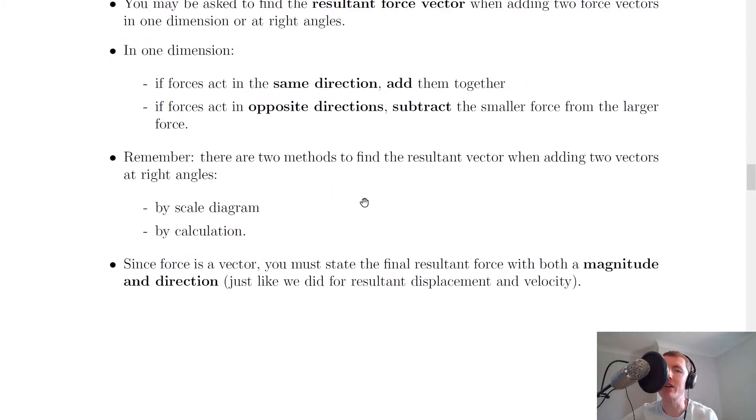Remember there are two methods that can be used to find the resultant vector when adding two vectors at right angles: the scale diagram method and the calculation method. The scale diagram method involves using a protractor and ruler to draw out a scale diagram of the situation, whereas the calculation method involves using Pythagoras.